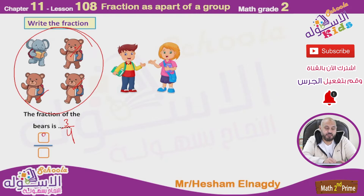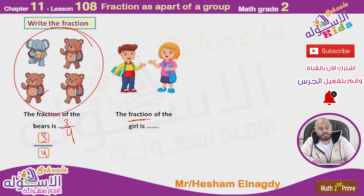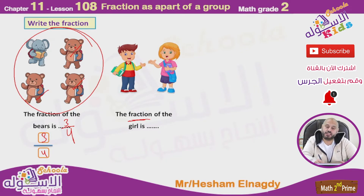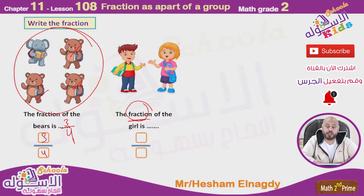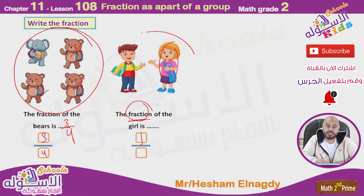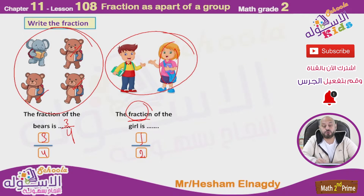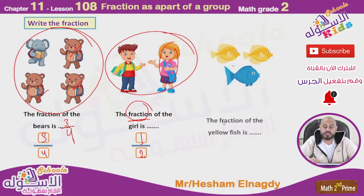Okay, three-fourths. Now tell me the fraction of the girls. Remember, we have the numerator and denominator. What is the number of girls? One — from the total number of people. One over two, one-half.